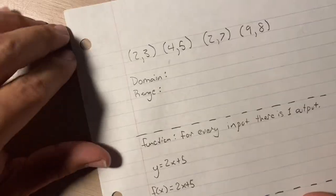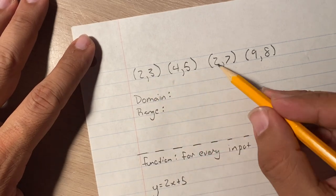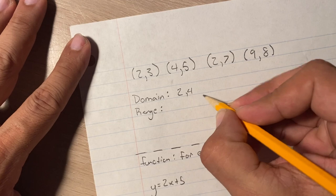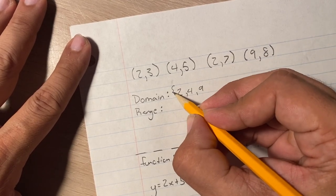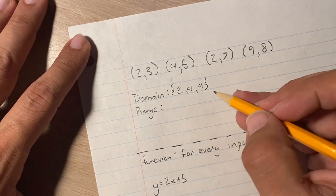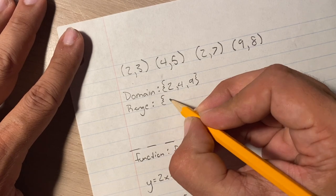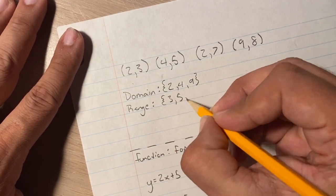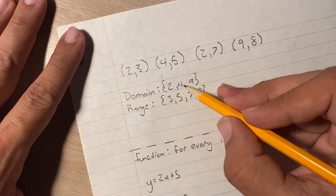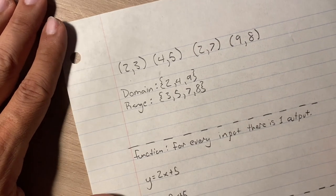A couple more things to show you. Domain and range, when they give you all the coordinates, is literally all the x's. So I have a 2, a 4. I already have a 2, a 9. So those would be 2, 4, 9, inside curly parentheses. And that is all possible x's. The y's are 3, 5, 7, 8. So I would write 3, 5, 7, 8. Okay, make sure you never write the repeated numbers. There was no repeated in the range, so I just wrote them all.